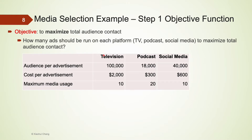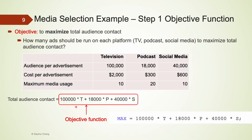Moving on to the objective function, this company tries to maximize the total audience contact. Each TV commercial reaches 100,000 viewers, each podcast reaches 18,000 viewers, and each social media ad reaches 40,000 viewers. The total viewers is 100,000×T + 18,000×P + 40,000×S. We define our objective function using MAX in Lingo.